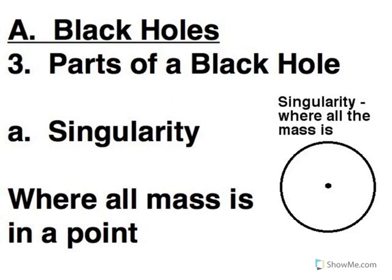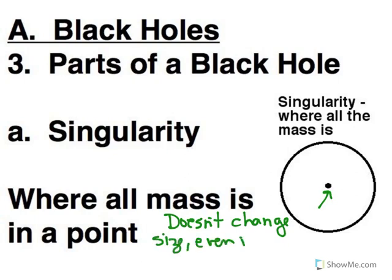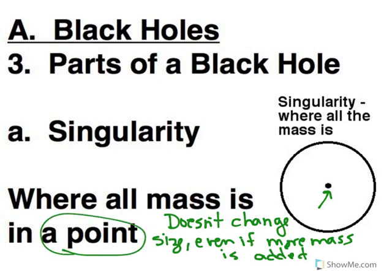The structure of a black hole is fairly simple. It's two main parts. At the center is the singularity. So that's where all the mass is. And this doesn't change size, even if more mass is added. Because it keeps getting compressed down to a point. So it's always a single point. And that's why it's called a singularity. It's one single point.